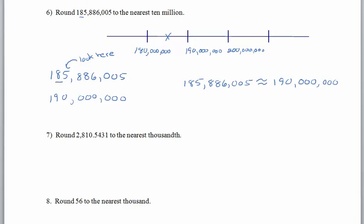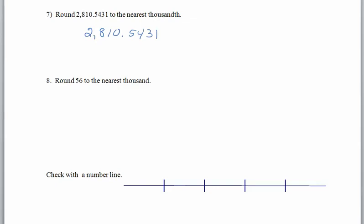Pause the recording and try the next couple, then start it again when you're ready. Rounding 2,810.5431 to the nearest thousandth: find the thousandths place and look to the right — the digit 1 is not large enough to make the 3 become a 4, so 2,810.543 thousandths. Either writing the trailing zero or leaving it off is fine.